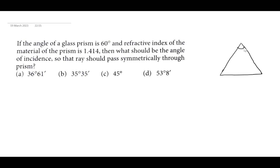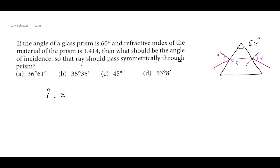The angle of the prism is given as 60 degrees. Since the rays pass symmetrically through the prism, if I draw a normal, the ray enters, bends, and exits symmetrically. This means the angle of incidence i and angle of emergence e are both equal — i equals e — and therefore r1 will be equal to r2.